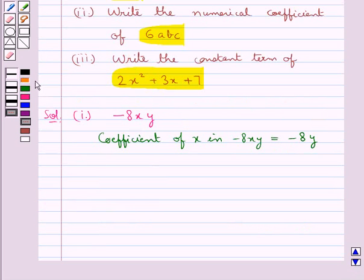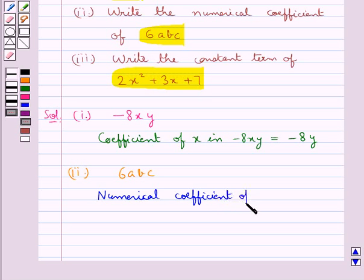Now the second part of the question is write the numerical coefficient of 6abc. So the numerical coefficient of 6abc is equal to 6.